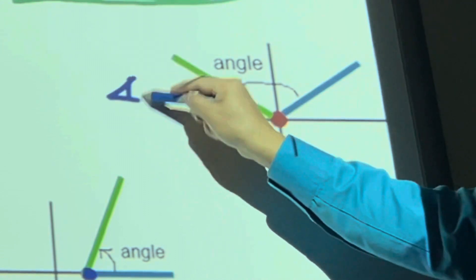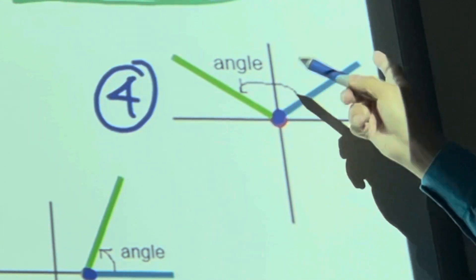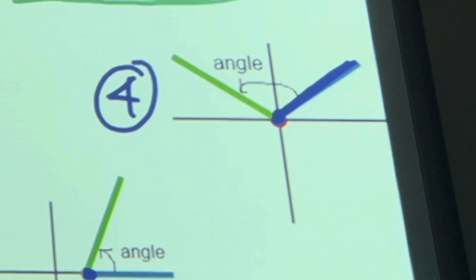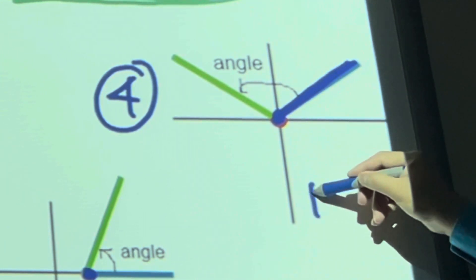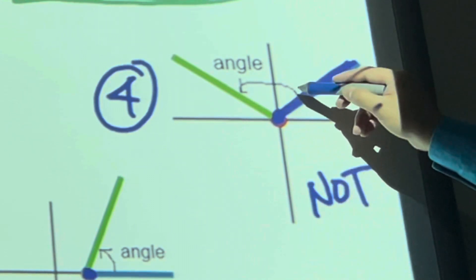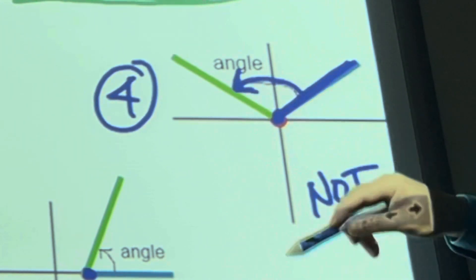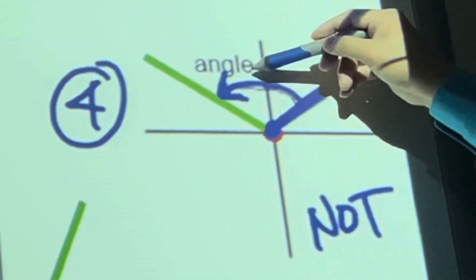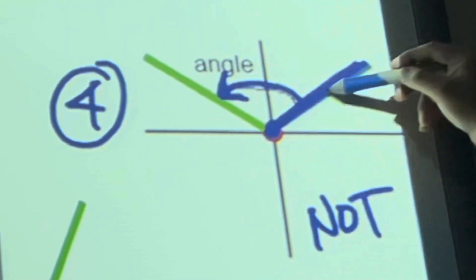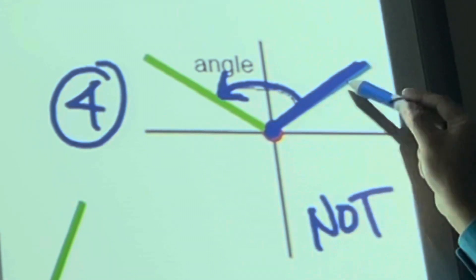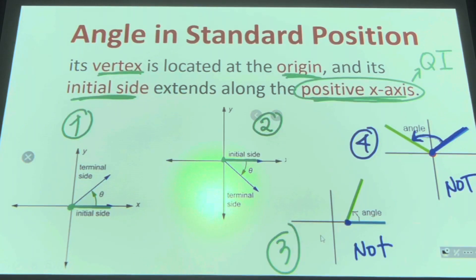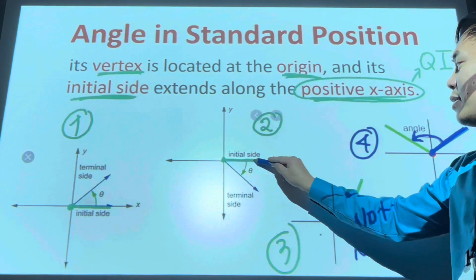In the fourth example, the vertex is on the origin — that's fine — but the initial side is not found on the positive side of the x-axis. Therefore, number four is also not in standard position. You will know the initial side based on the arrows: the side where the angle starts is the initial side, and the side where it stops is the terminal side. An angle in standard position must have the vertex at the origin and the initial side starting at the positive side of the x-axis.